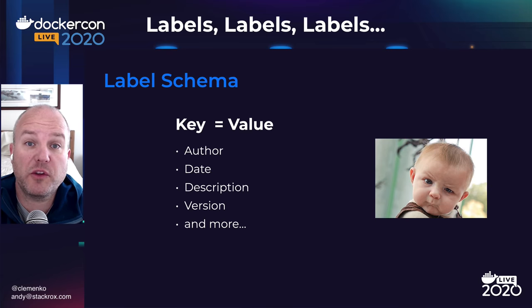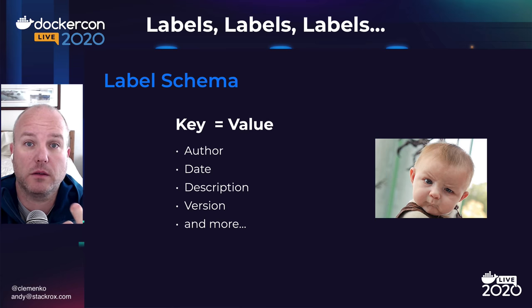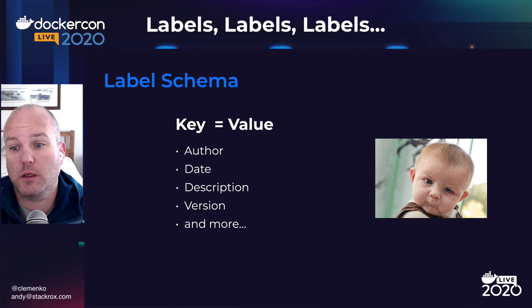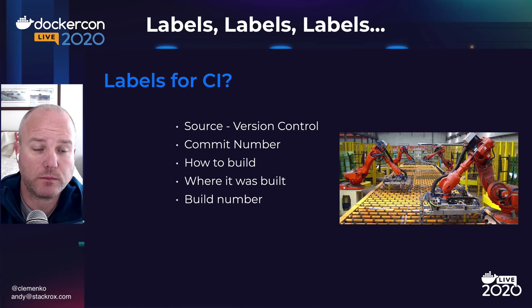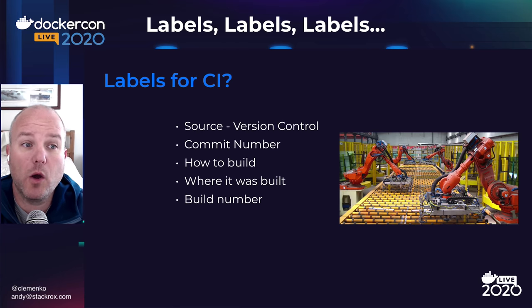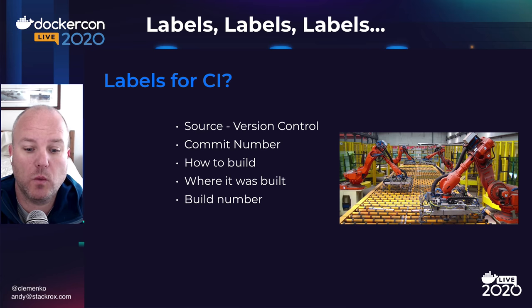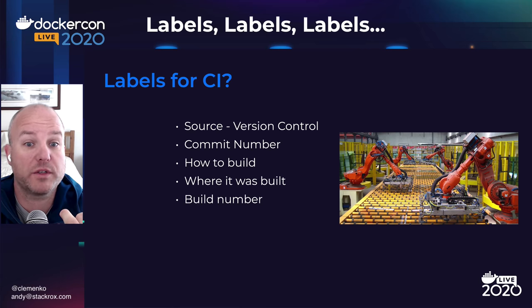Let's start off with some of the simple keys: author, date, description, version — some of the basic information around the image. That would be pretty useful. What about specific labels for CI? What about where's the version control, where's the source — whether it's Git, GitLab, GitHub, Gitosis, even SVN? Where are the source files that built the image? Where's the Dockerfile that built this image?